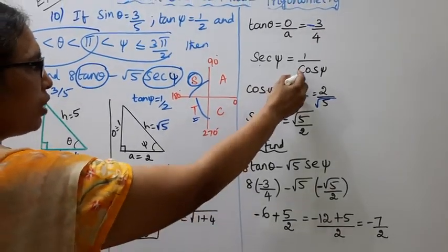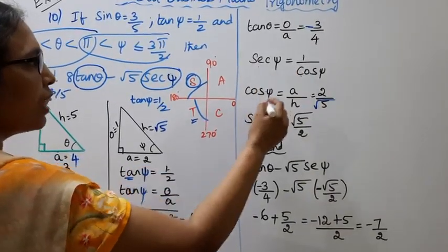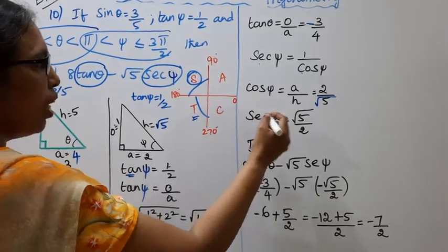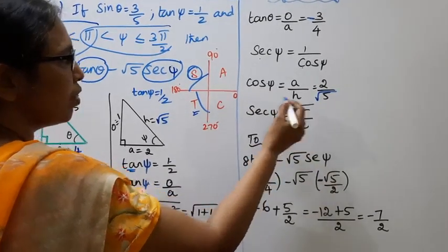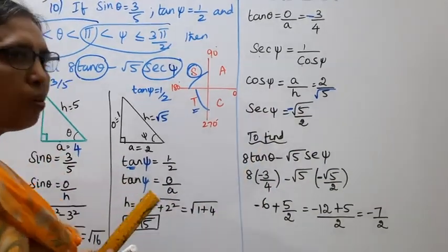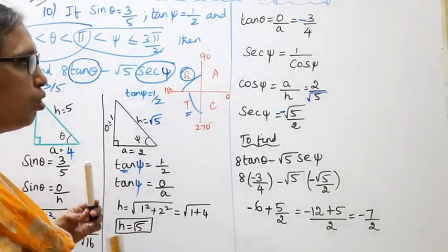Since φ lies between 180° to 270° (third quadrant), sec φ is negative. sec φ = hypotenuse by adjacent = root 5 by 2, so sec φ = minus root 5 by 2.